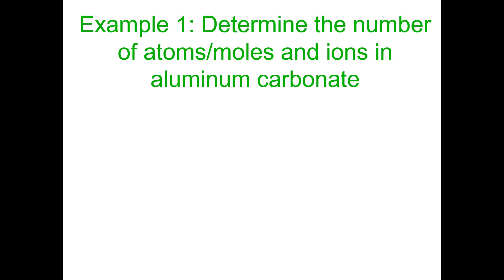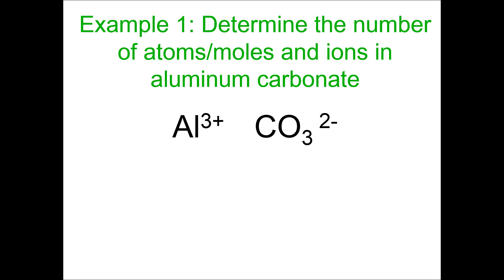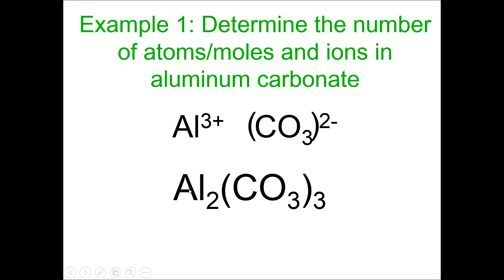Here's the first example. If I ask you to determine the number of atoms, moles, and ions in aluminum carbonate, the first thing to do is write a formula for it. Remember that aluminum carbonate is an ionic compound. Aluminum has a 3+ charge, and carbonate is a polyatomic ion from the back of the periodic table. We can apply the crisscross method, and we end up with a formula of Al₂(CO₃)₃ — super important that the CO₃ is inside parentheses with a 3 on the outside.